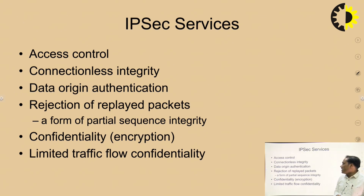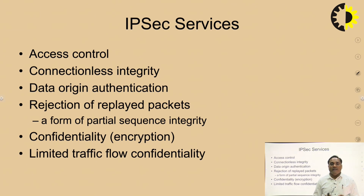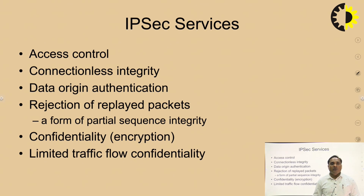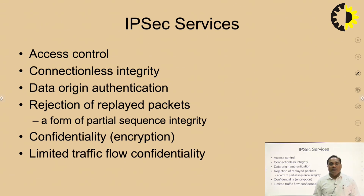Next is data origin authentication — if your data is moving from one end to another, you need to authenticate that data and know from which place you are getting it. Next is rejection of replayed packets: sometimes you receive packets that are not authenticated, so you reject them because the packet address does not match what is expected by both systems.